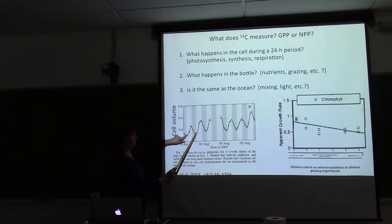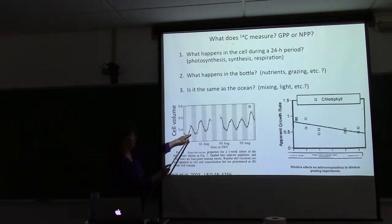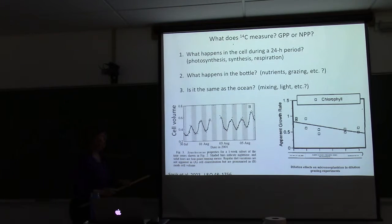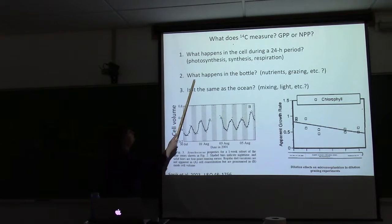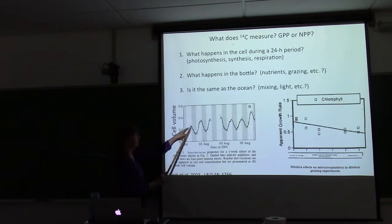So it's photosynthesizing and making new cell constituents. This is the mean of a population of Synechococcus. She's individually counting the Synechococcus and measuring their scattering. You can see the cell is getting bigger, and then at night the cell is dividing. But there is also some respiration, which will cause a loss in cell size. In terms of thinking about what happens to that photosynthate, it's going into synthesis of cells.